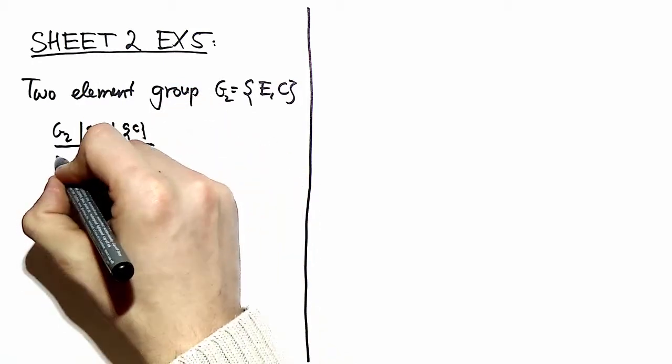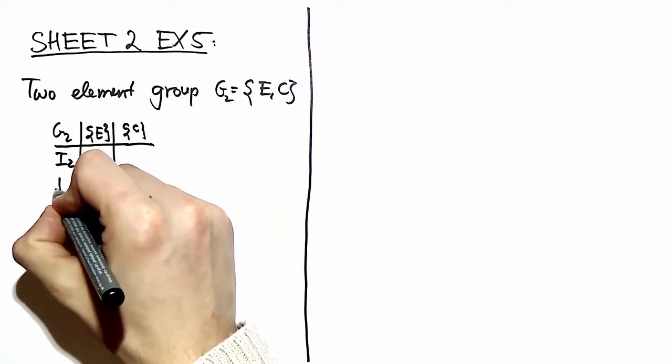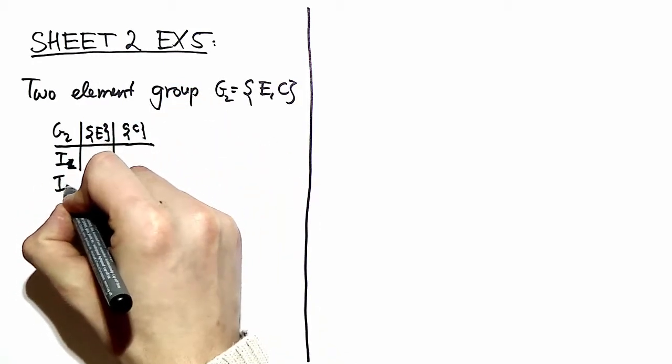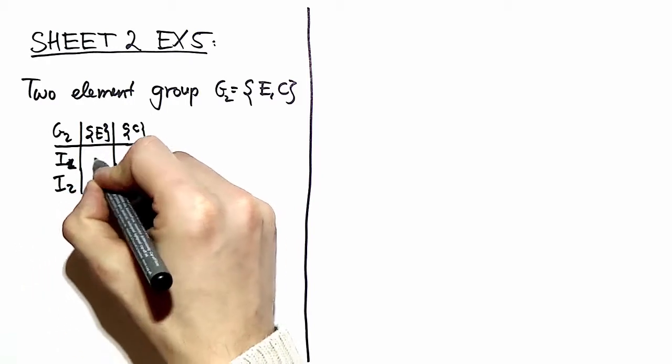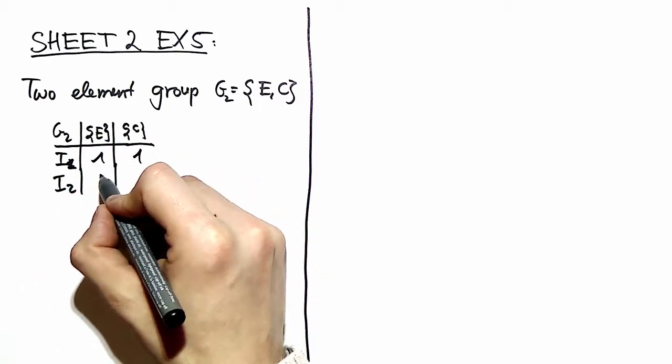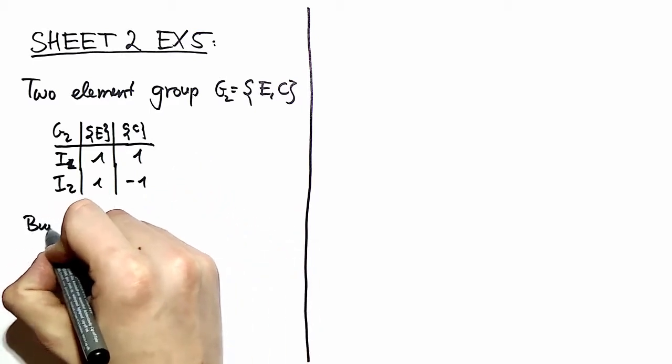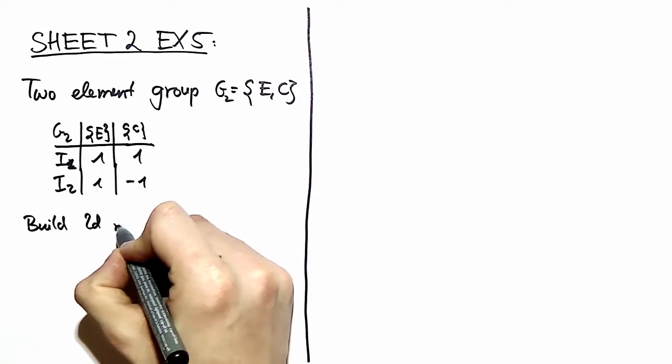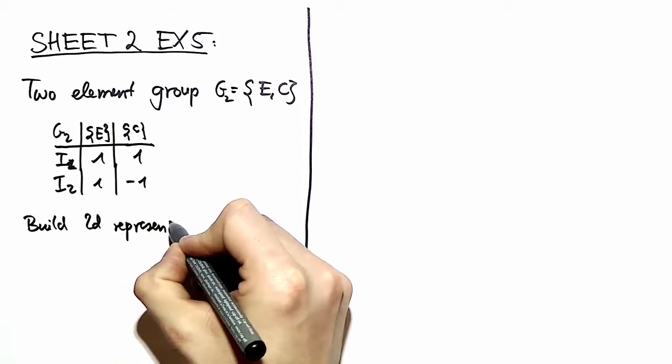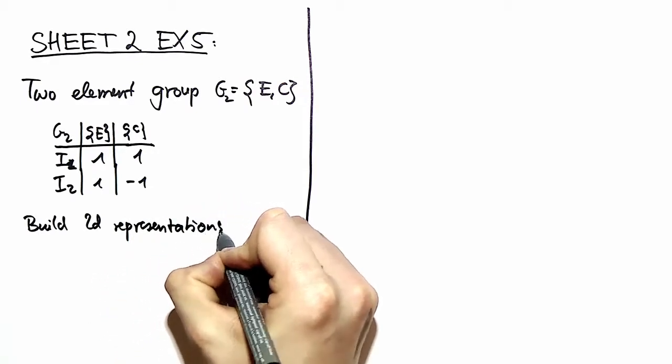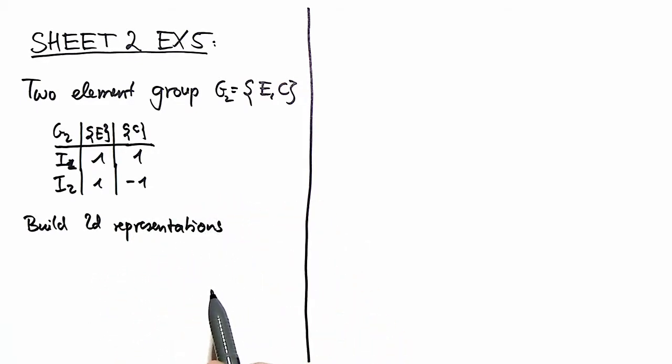That means we have two irreducible representations, I1 and I2. One's the identity and then the parity. In the next step, we want to build two-dimensional representations, and we want to build the most general two-dimensional representations, and there are three of them.